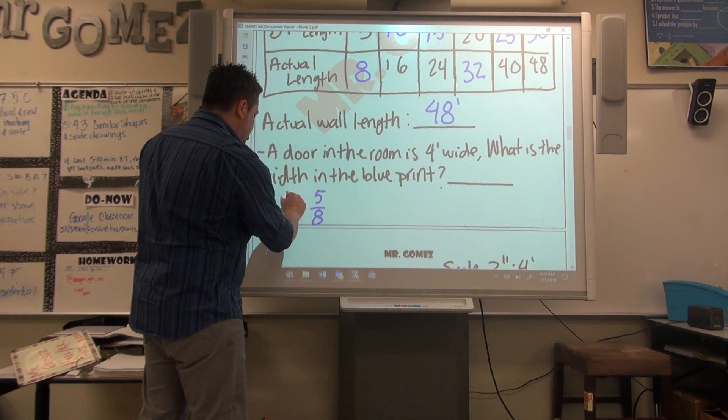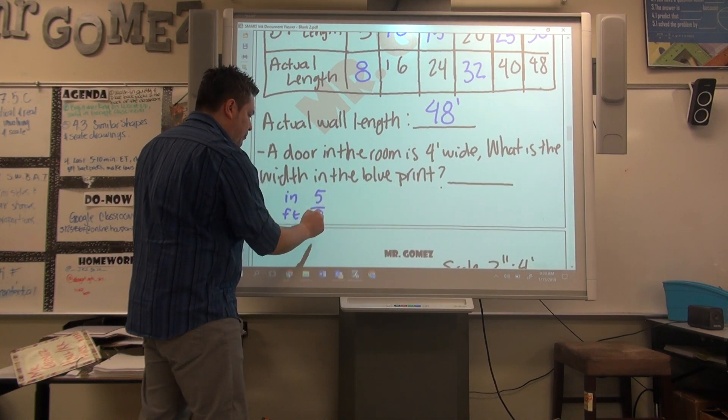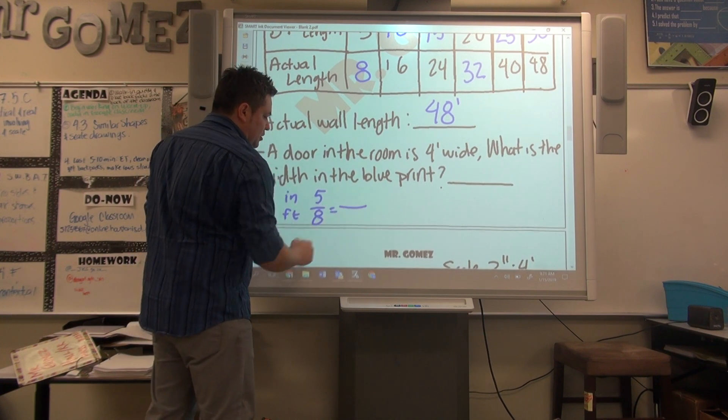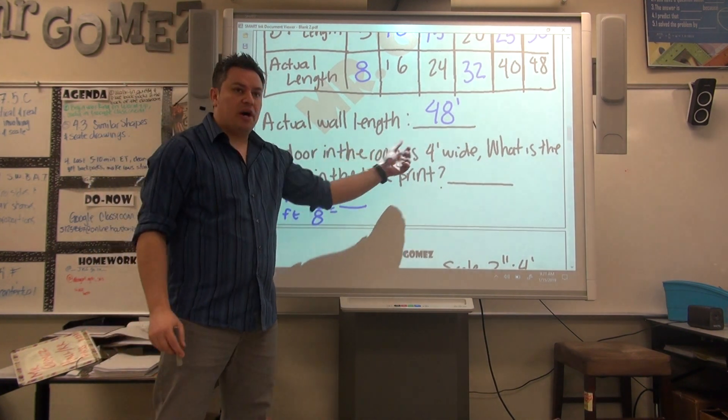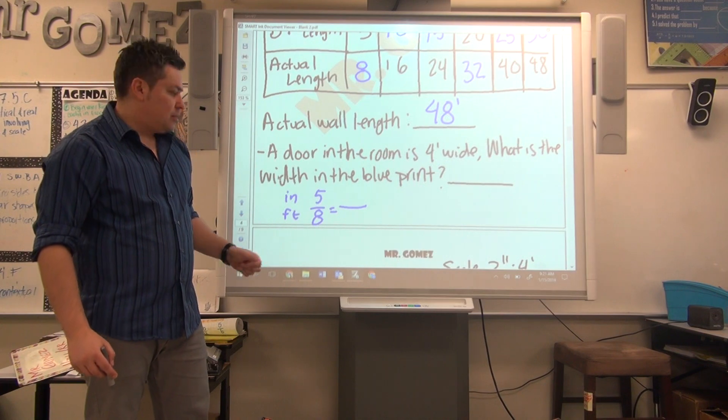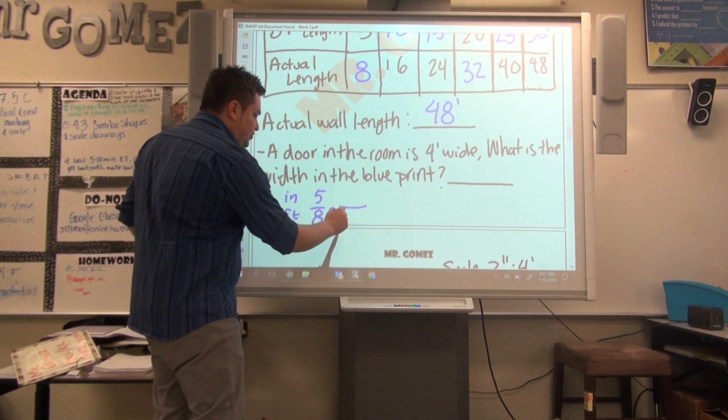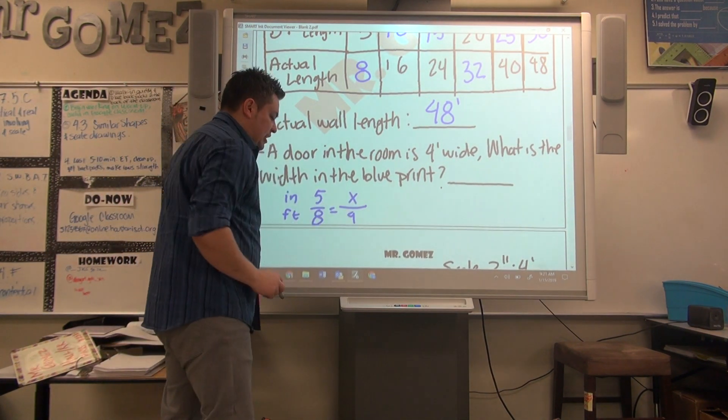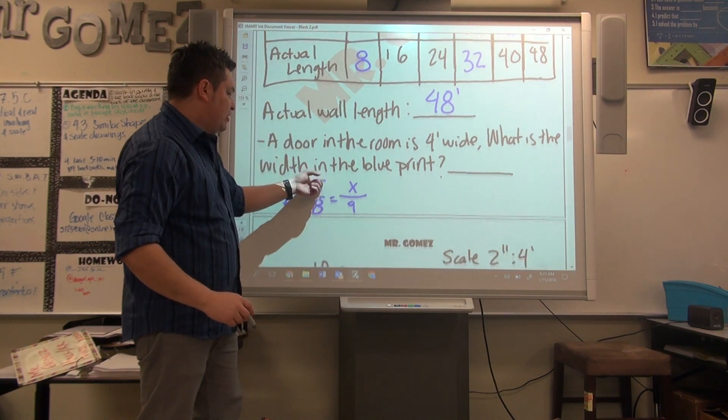5 to 8, and we have 4 feet. This is inches, this is feet. You can set up your proportions. So the feet go where? On the bottom. So this is 4 and this is x.